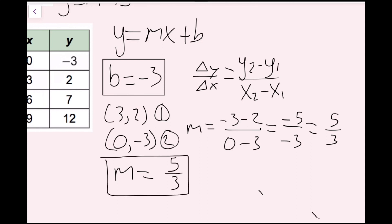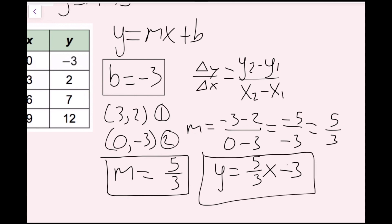The last thing I need to do is plug in my m and my b into the y equals mx plus b equation. So that's going to be y equals five thirds x minus three, because the y-intercept is negative three. If it was a positive three, it'd be plus three. But since it's negative, it's minus three. Now we're done with this one.